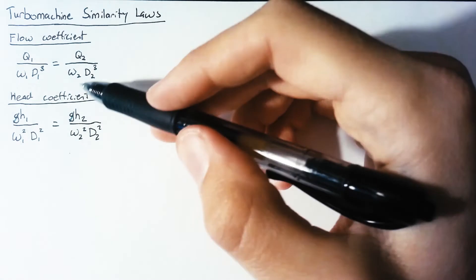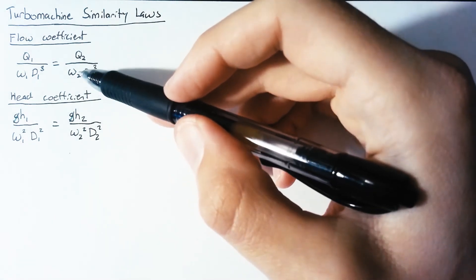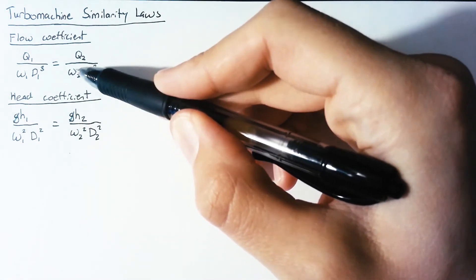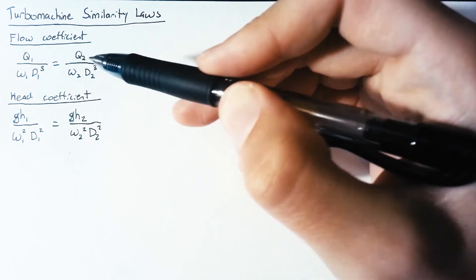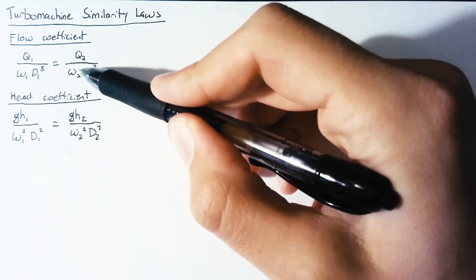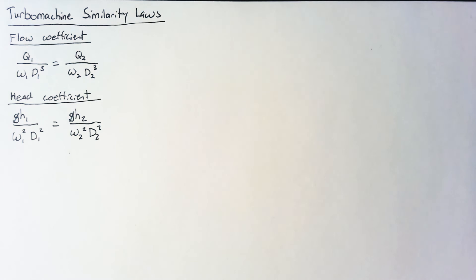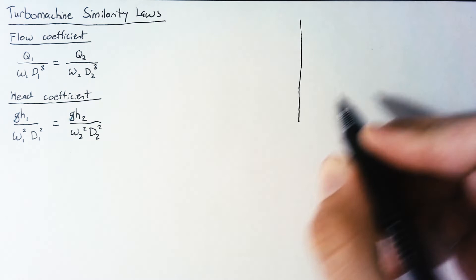So what do we get if we use these similarity laws? One way to use them is to ask the question what happens to our pump curve if we change one of these parameters. If we change our omega and leave everything else the same, how does our pump curve react?